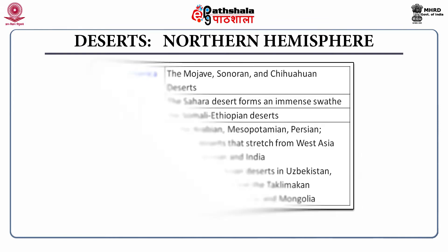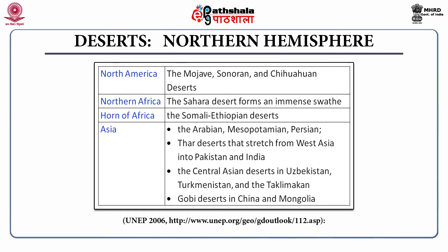In the northern hemisphere, the major deserts of North America are the Mojave, Sonoran and Chihuahuan deserts. In northern Africa, the Sahara desert forms an immense swathe — a long strip of land. In the Horn of Africa are the Somali and Ethiopian deserts. In Asia, there are the Arabian, Mesopotamian, and Persian deserts stretching from West Asia into Pakistan and India.